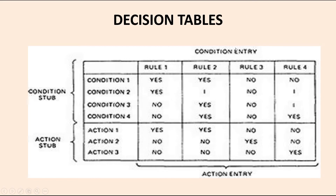Now let's see how decision tables can be represented. We have four different areas. For condition 1: rule 1 is Yes, rule 2 is Yes, rule 3 is No, rule 4 is No. For condition 2: rule 1 is Yes, rule 3 is No. The actions combined with conditions form the rule set, which clearly specifies what actions apply under which conditions.